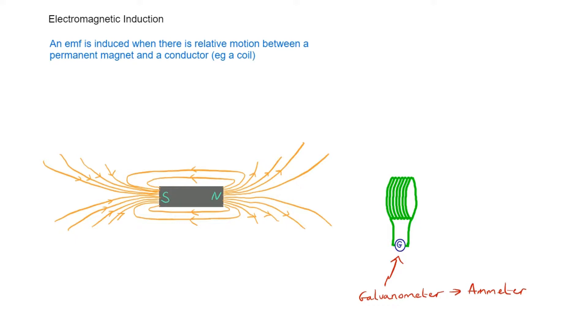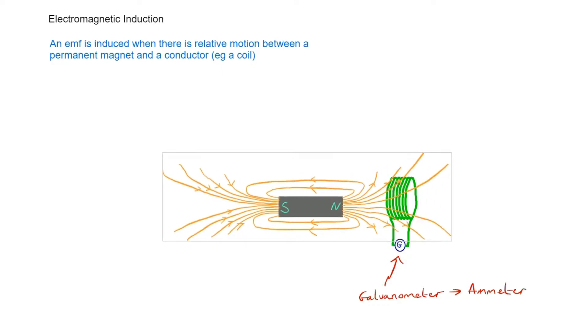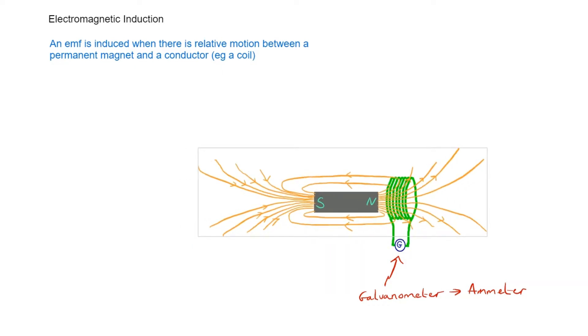We can find out if there's a voltage, an EMF induced in the coil, by seeing if a current flows through it. Right at the beginning, we just have the coil stationary and the magnet stationary. Those magnetic field lines would be extending through the coil, but the field would be very weak because it's quite a long way away. There would be no reading on the ammeter. What I could do is bring this coil nearer, right up close to the magnet and leave it there. Would there be a reading? The answer is no, because while it's stationary, there's no relative motion.